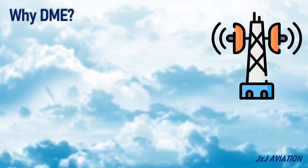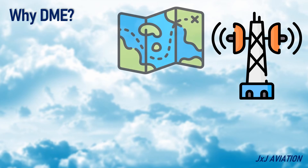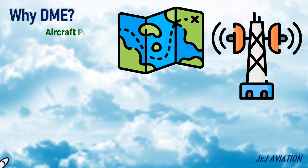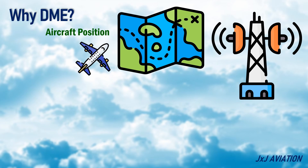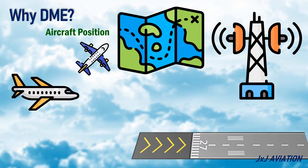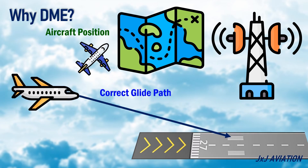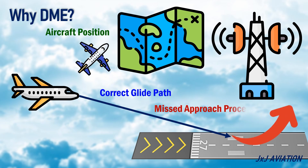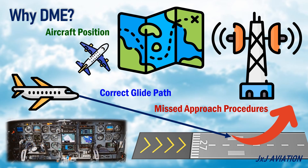Why is a DME useful? DME is helpful during navigation to understand an aircraft's position during flight. DME information may also be used during approaches to ensure the aircraft is descending on the correct glide path, and for certain missed approach procedures. The DME readings are usually checked along with other aircraft instruments for precise guidance.